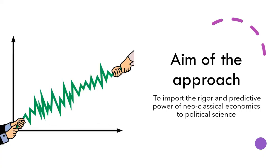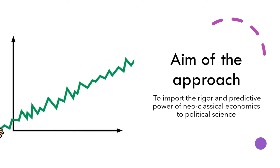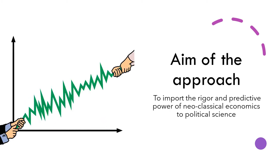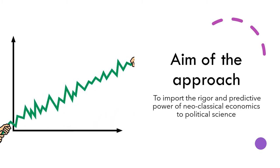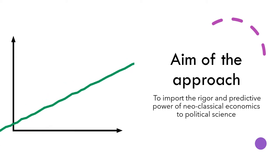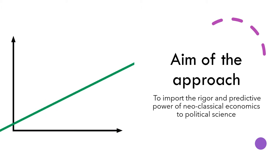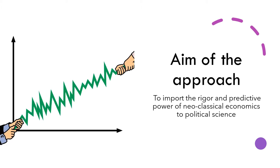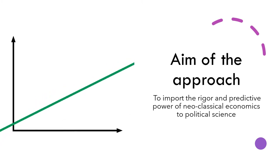Rational choice theory is an approach in understanding political phenomena. As an economic theory of politics, it derives the majority of its core assumptions from economic theory. This theory was developed by some economists and political scientists in the United States in the 1960s. It can also be traced to the realist tradition in international relations, where scholars understand states' actions as mere self-interest.